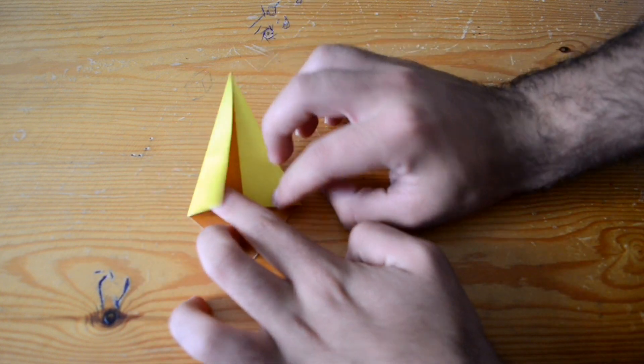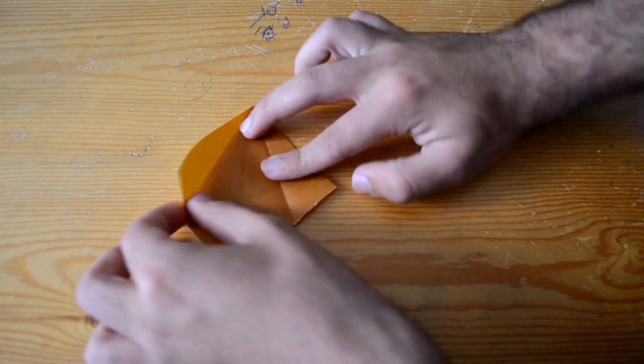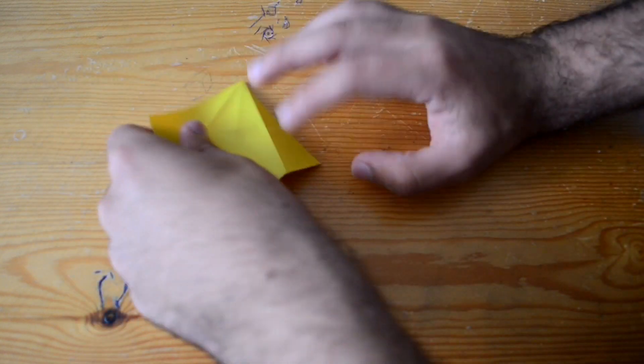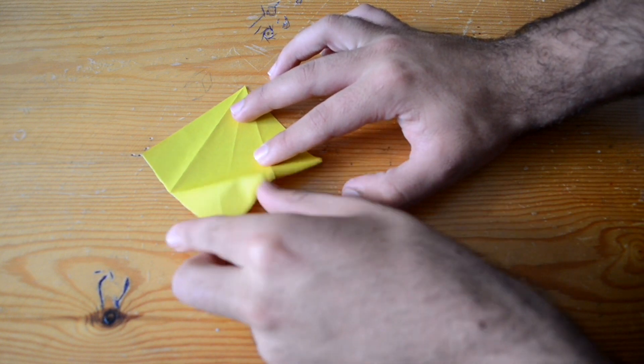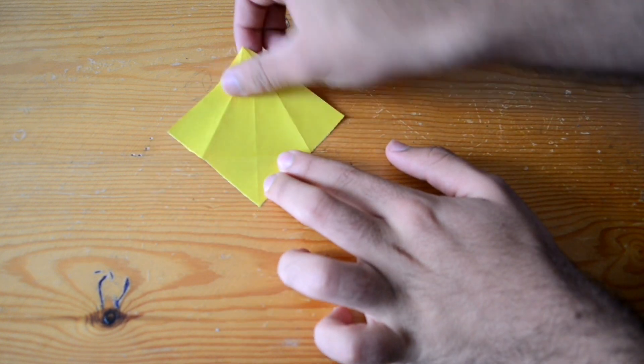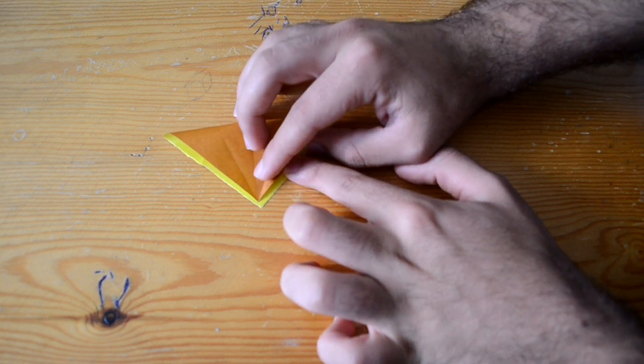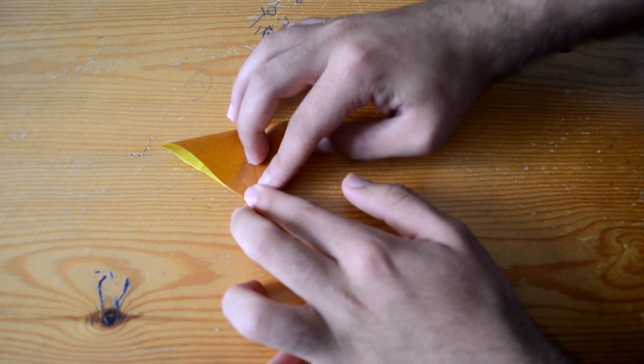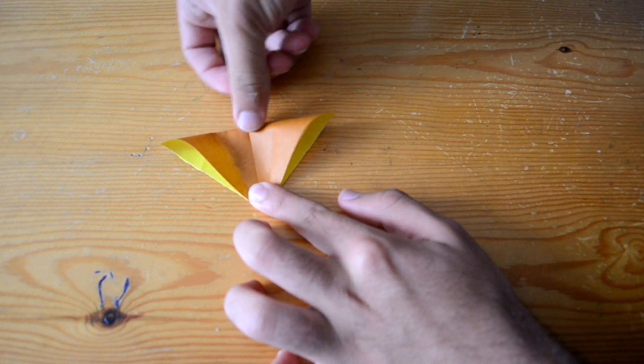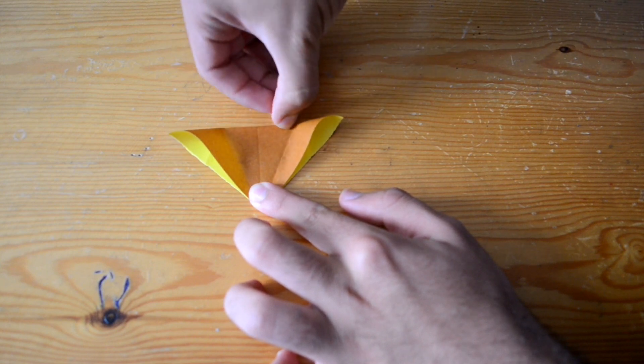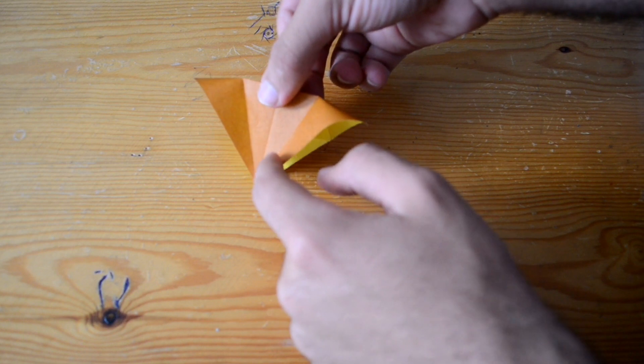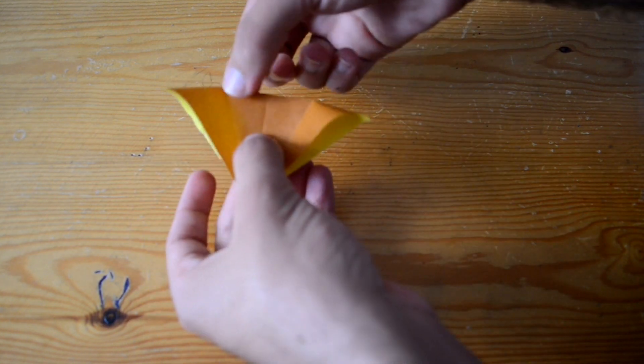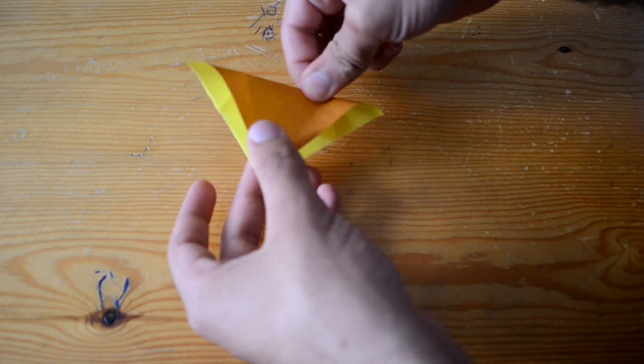Then unfold the paper and turn it to this side, then take the top of the paper down and fold only between these two lines. You'll see there are only two folds here, this one and this one. So only between these two lines, fold the paper.